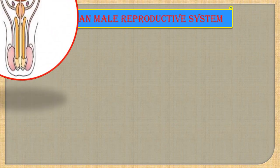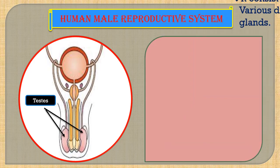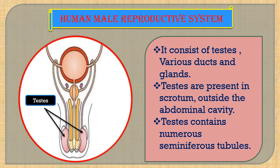The Human Male Reproductive System consists of testes, various ducts, and glands. The testes are present in the scrotum, which is a sac-like structure inside which the testes are lying. This scrotum is outside the abdominal cavity. The testes are two in number, they are slightly pinkish in color, and they contain male gametes, that is the sperms.